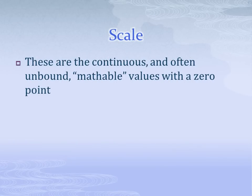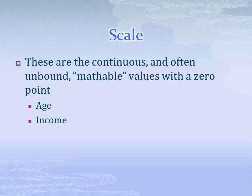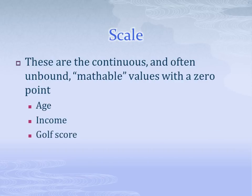Lastly, and easiest to understand, are scale variables. These variables are continuous and usually unbound, and have an intrinsically meaningful zero point. For example, age can range from zero to about 110. Income, on the other hand, can be either positive or negative and has no real bounds. Notice that in the case of income, zero is also a meaningful value, though perhaps not as desirable as in golf.